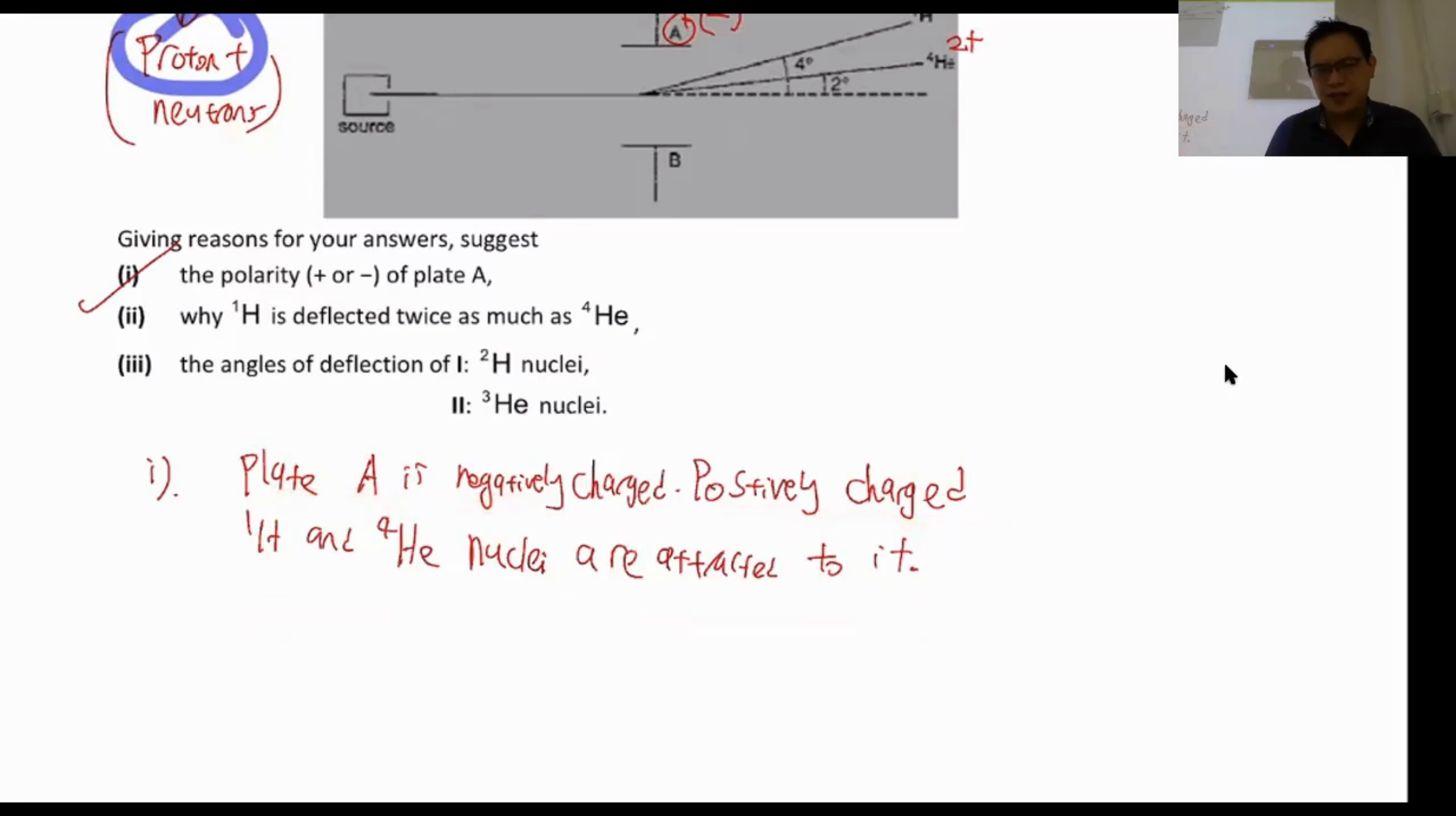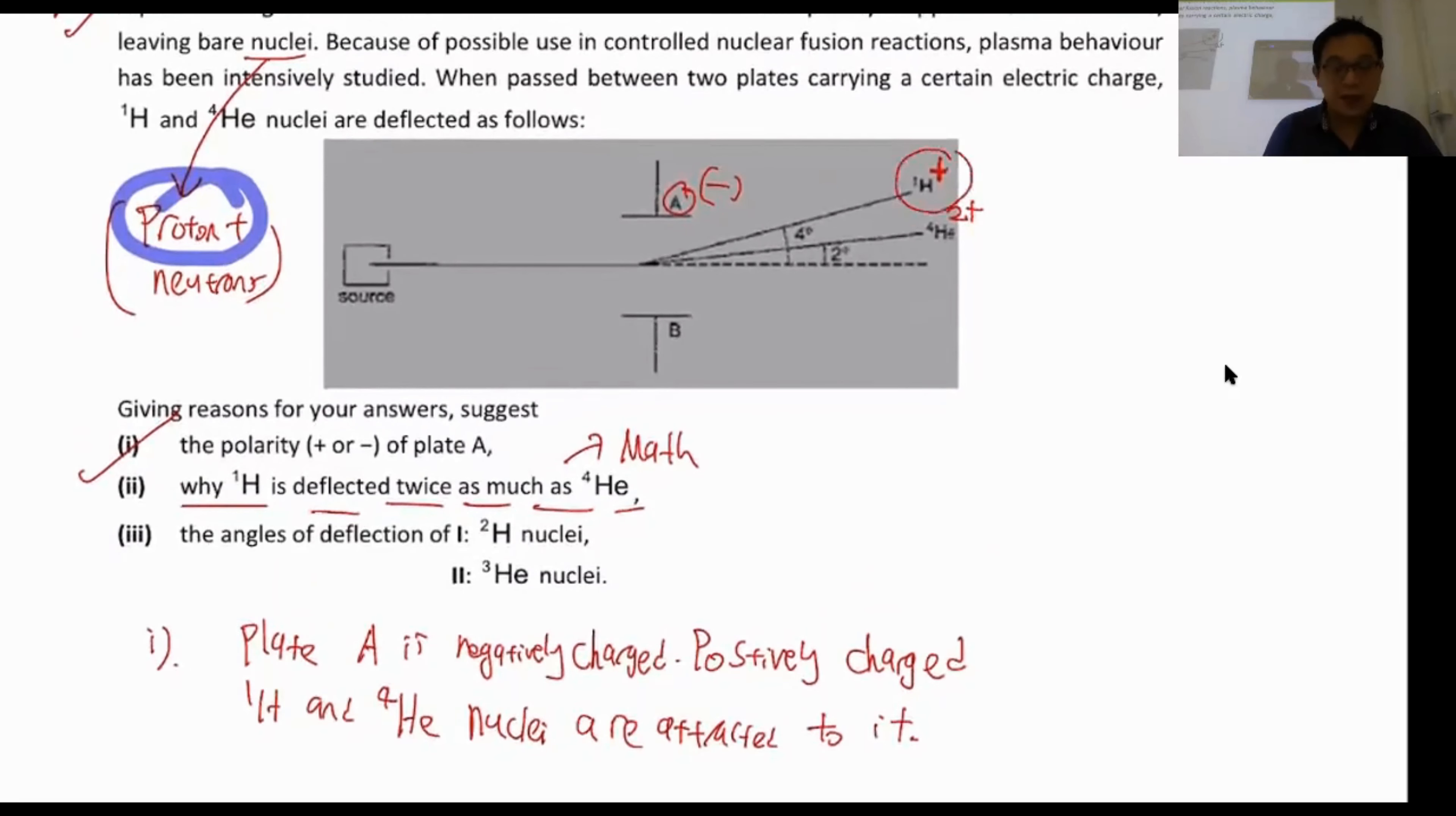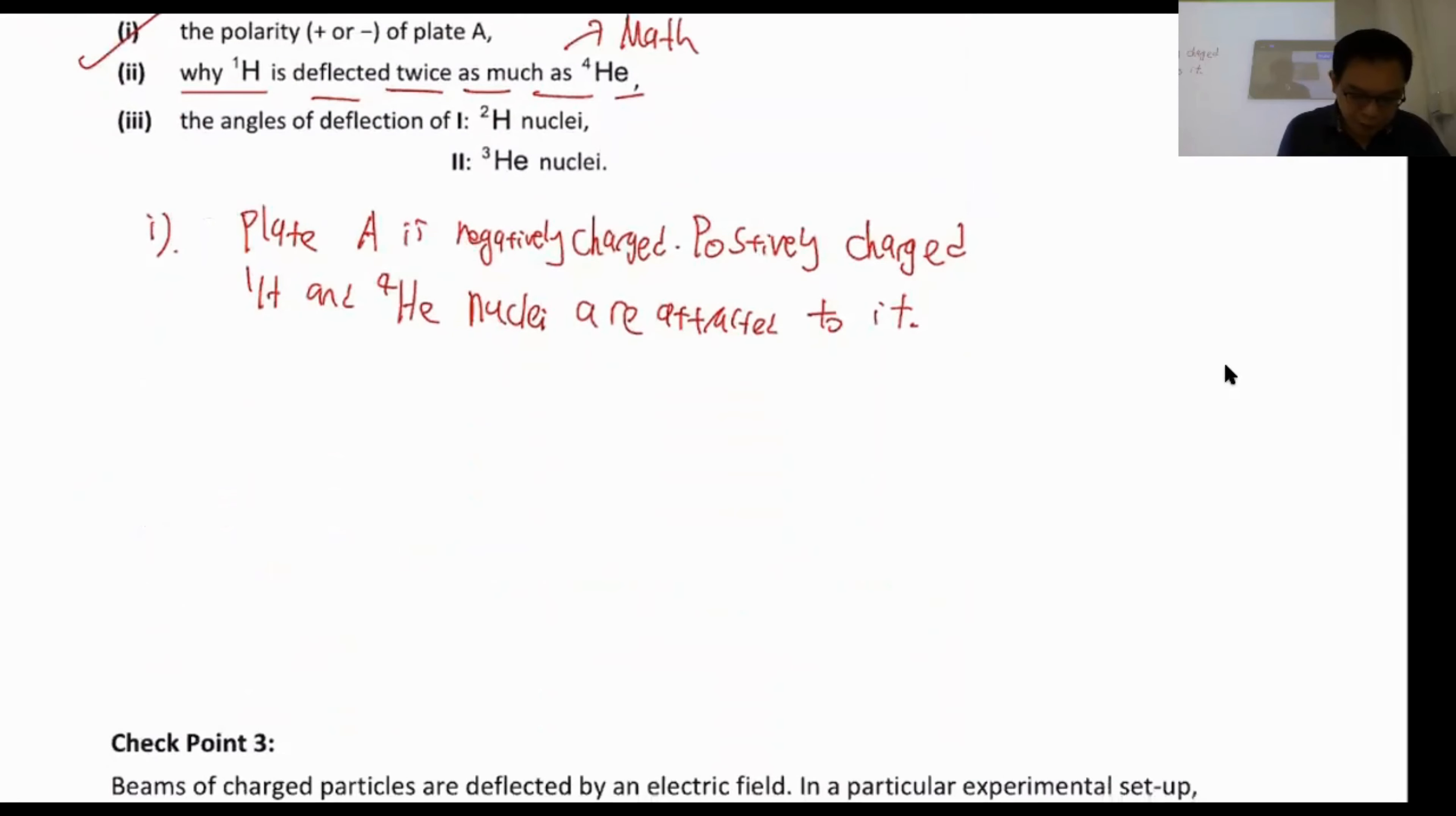Now, for this kind of question, they like to ask you a lot of things like calculation and explanation. Like for example, part two, explain why the proton, ¹H, is deflected twice as much as ⁴He. Now, the way to explain this kind of question, especially explain why one angle is twice than the other one, all you need to do is use mathematical way to present your answer. Let me show you what I mean by mathematical way. Take for example here. I know that my proton, the charge is one, mass is one. So that means angle of deflection is proportional to the charge over your mass. And let me show you what I mean. So I'm going to write down part two. I will say that for your charge over mass, remember charge over mass represents the extent of deflection, is equal to plus one over one. This represents your proton.